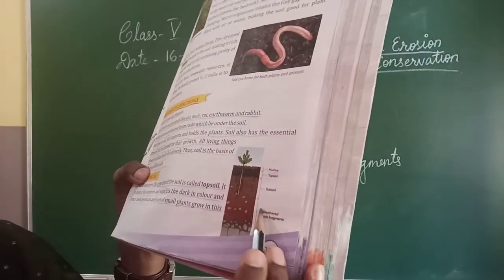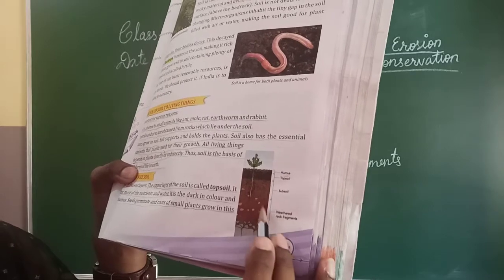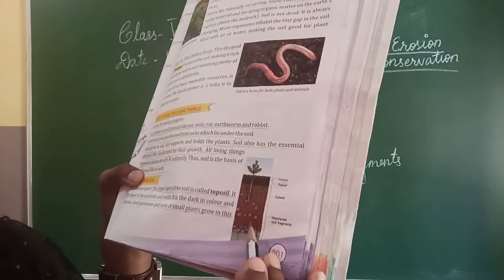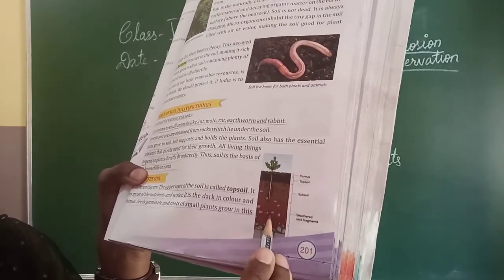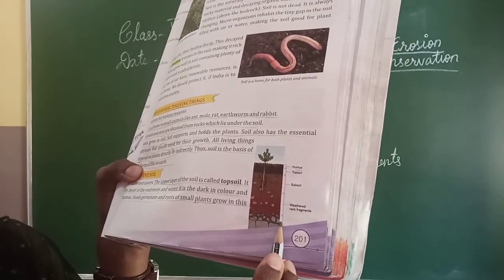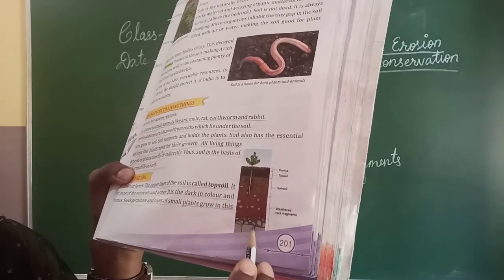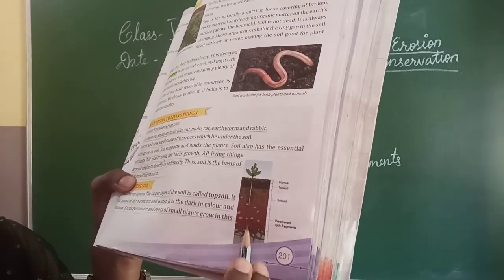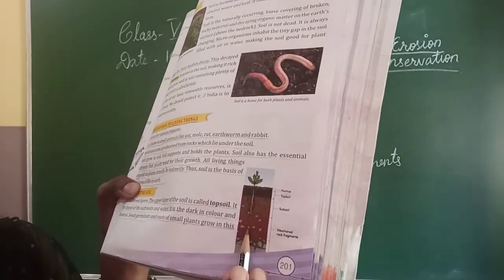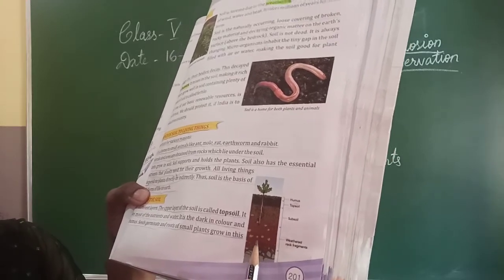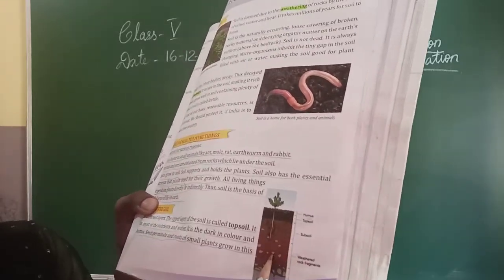Coming down to the next layer, that is weathered rock fragments. This layer contains small pieces of stones and big pieces of rocks. These rock fragments have come from the parent material, which is the bedrock — the full rocky layer. From this bedrock, small pieces have been broken off and are present here in the weathered rock fragments layer. This soil is not rich in nutrients and can hold very little water. It is also not very porous.